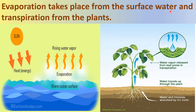Evaporation takes place from the surface water and transpiration from plants. Water converting into water vapor is called evaporation, and it occurs due to heat energy from the sun. The water vapor released from leaf pores is called transpiration — the roots absorb water and minerals from the soil, which is then transported to the leaves.